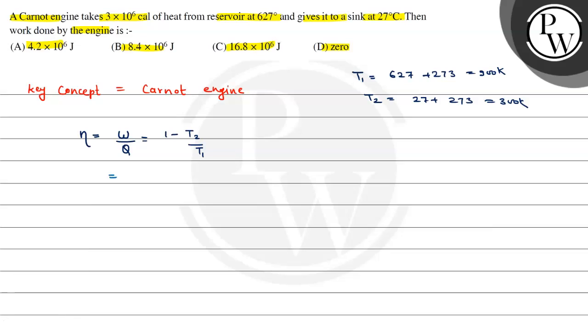Work done divided by Q, where Q is given as 3 × 10^6 calories, equals 1 - T2/T1, which is 1 - 300/900.